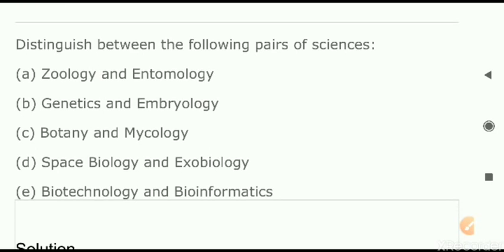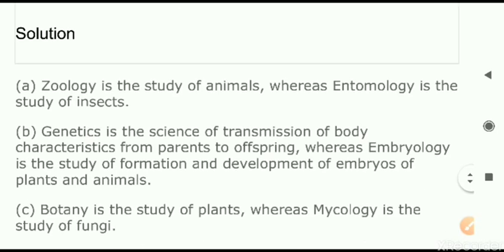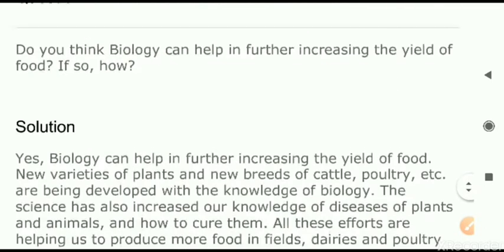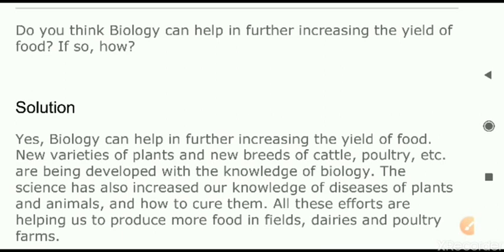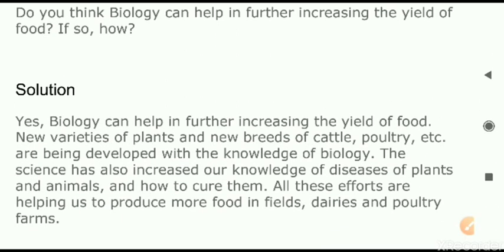Now there are differences between only the definitions — you can note them down; that is given in the book itself. You can write the answers in a straight line or make a table and write the definitions. Next question — do you think biology can help further increase the yield and quality of food? Yes, definitely. If biology is applied, more food can be produced. The example is the Green Revolution — new varieties of plants and new breeds of cattle can be developed by the knowledge of biology, and by that we can have a better yield of food crops.